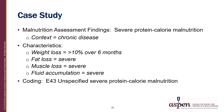The malnutrition assessment findings: this patient has severe protein-calorie malnutrition in the context of chronic disease, because he has chronic obstructive pulmonary disease. The characteristics include weight loss of greater than 10% over six months, severe fat loss, severe muscle loss, and severe fluid accumulation. For coding, he would be coded as E43, unspecified severe protein-calorie malnutrition.